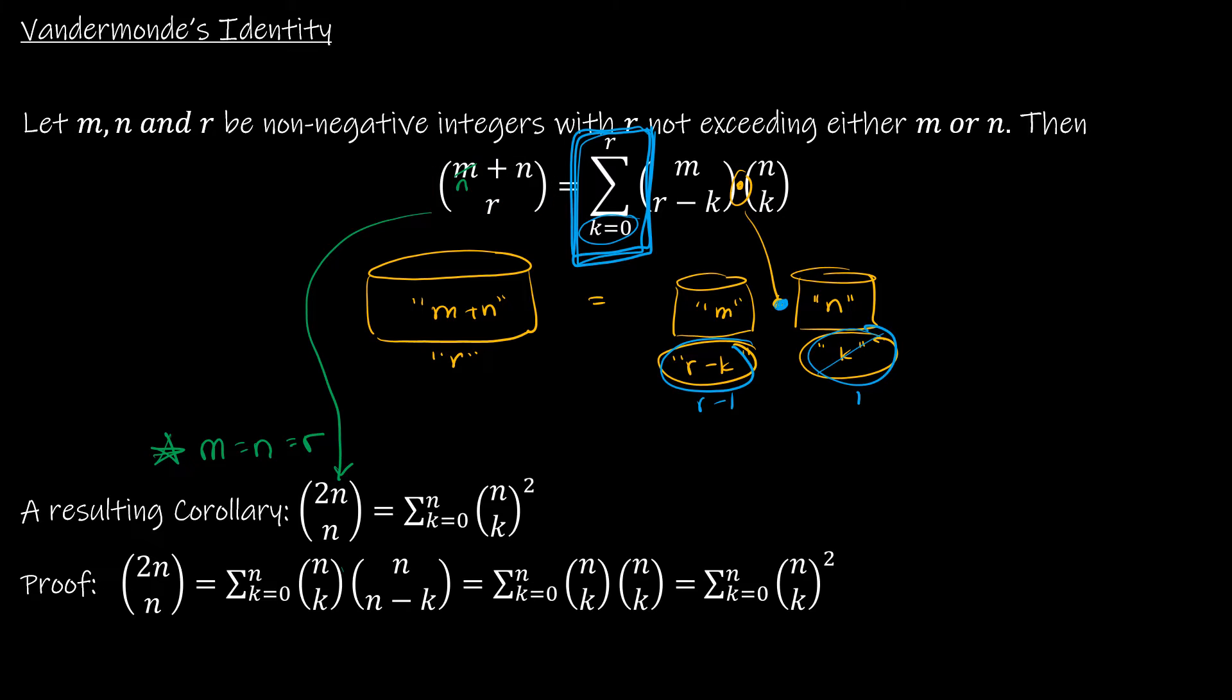So again, using Vandermonde's identity, Vandermonde's identity says this. So I'm going to have k goes from 0 to n, again, not to r because we're saying r is the same as n.